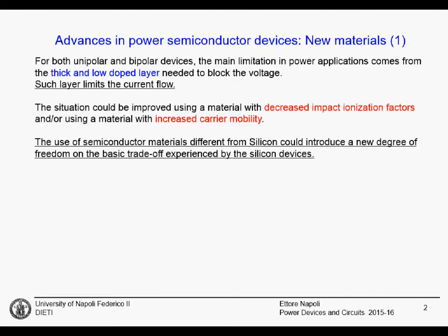What we understood from our lectures is that an important limitation in the design of power semiconductor devices comes from the fact that we need a very thick and lightly-doped layer somewhere in the device in order to block the voltage. This has been studied for the PIN diode at the beginning, but we have seen that this is exactly the same in BJT, IGBT, SCR, and every other device. This thick and lightly-doped layer will limit the carrier flow.